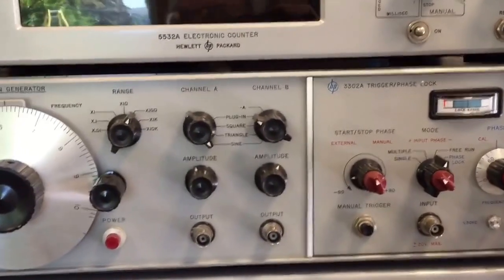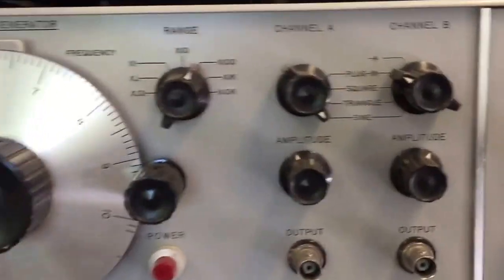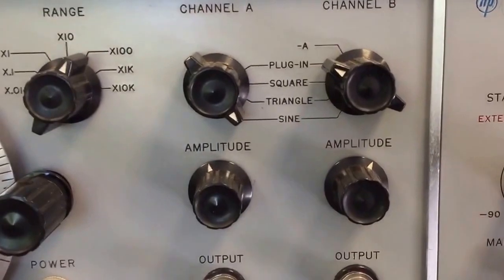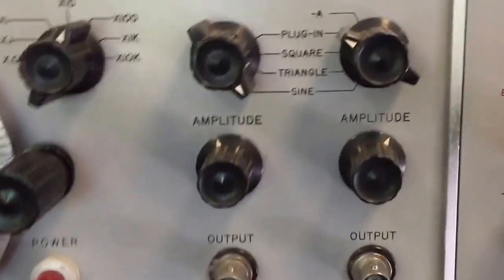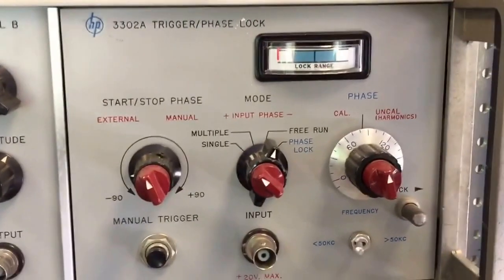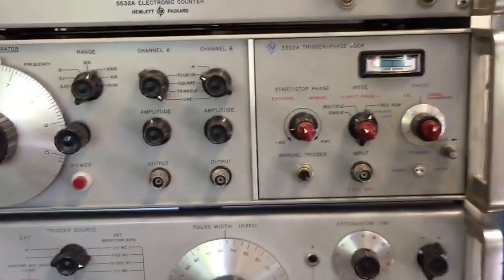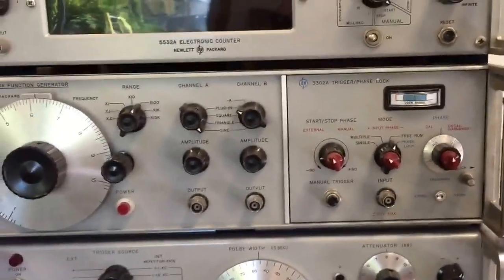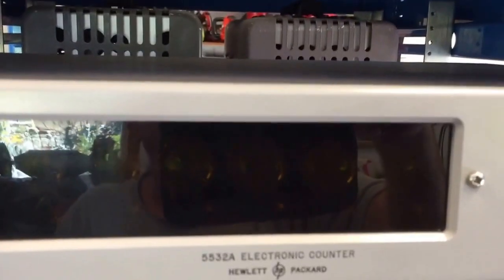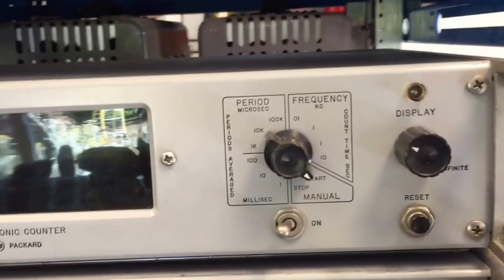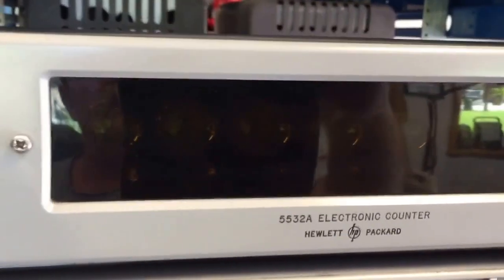There's a 3300 function generator which had two outputs with different waveforms. It also has this trigger phase lock so you can do pulse modulation and some other stuff. Here is an electronic counter that uses Nixie tubes, similar to that other counter. This was the model that was certified for world land speed records in the mid-60s.